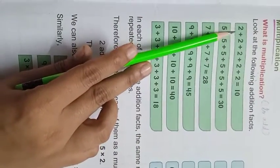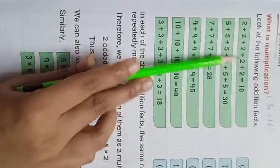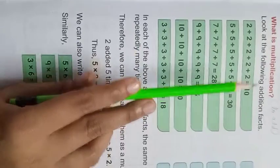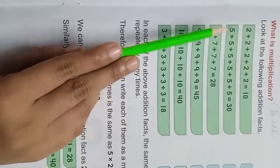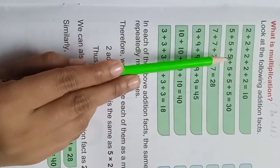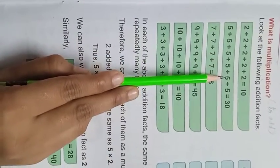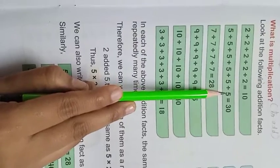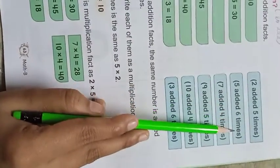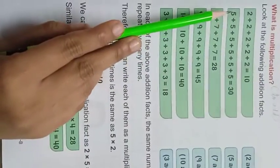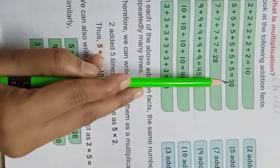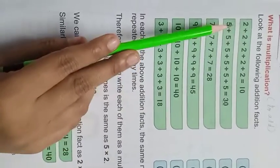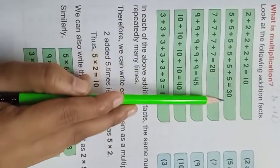Two ko jab five times add karenge, to hamne kya milti hai? Ten. Similarly, five ko yaahan dekhe kitne times add kiya gaya hai? One, two, three, four, five, six. Five added six times. Jab hamne five ko six times add kiya, to iska total hamne kya mila? Thirty. Five, six times are thirty.